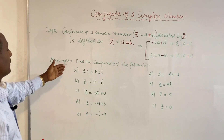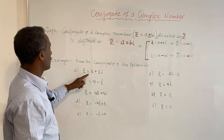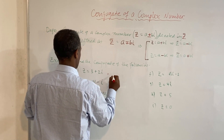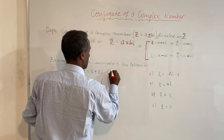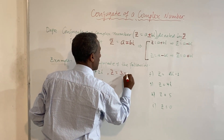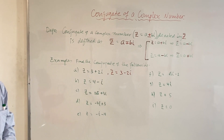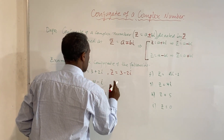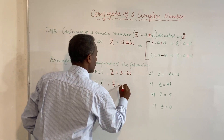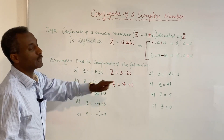Let us see some examples. If z equals 3 plus 2i, then z-bar will be 3 minus 2i. Here, if z equals 4 minus i, then z-bar will be 4 plus i, because the minus i becomes plus i.